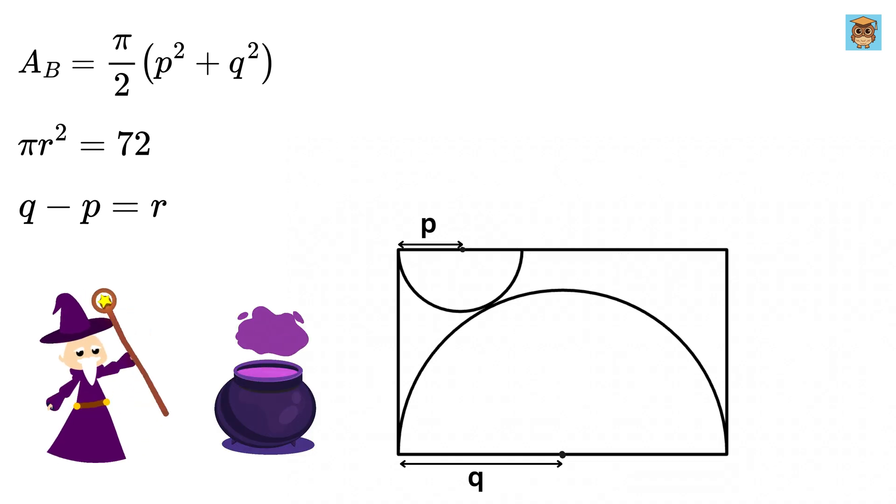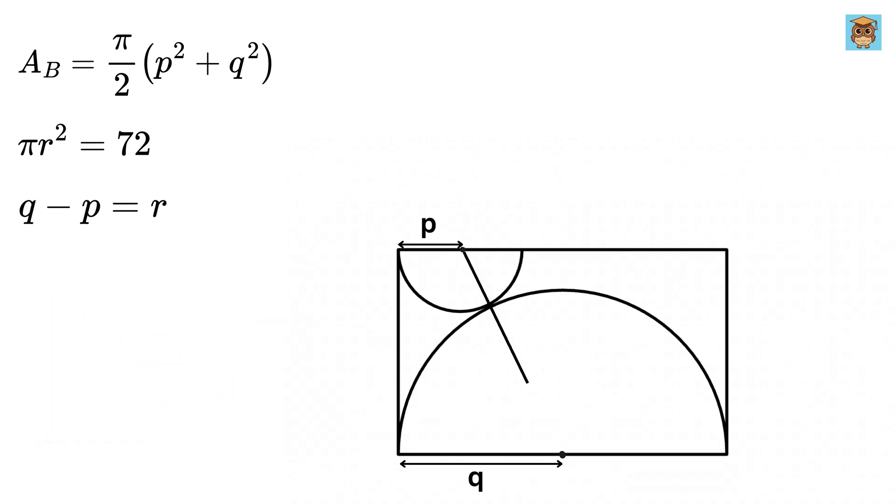Now, here comes the magic. Connect the centers of both these semicircles. You know that it will pass through the point of contact, right? Now, this piece is of length P, and this is of length Q. Therefore, this entire length will be P plus Q.